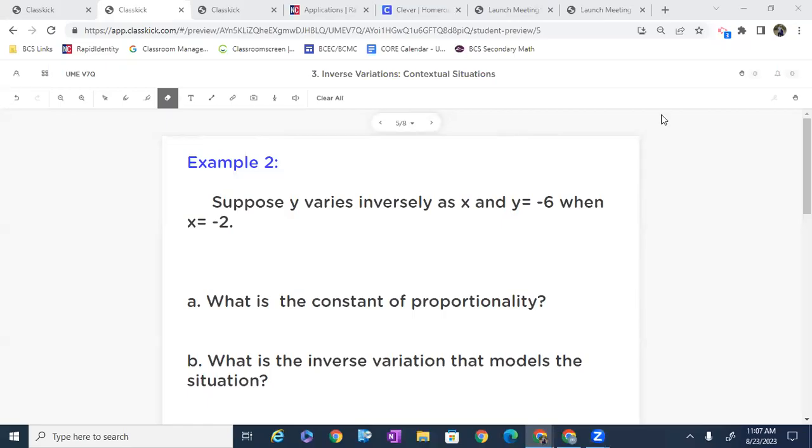All right, y'all, let's go ahead and look at a typical inverse variation problem. It says, suppose y varies inversely as x and y equals negative 6 when x equals negative 2. What is the constant of proportionality and what is the inverse variation that models the situation?